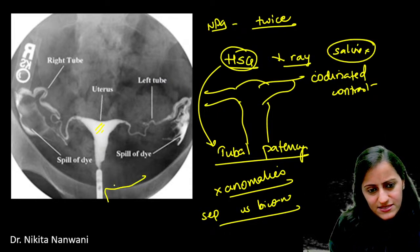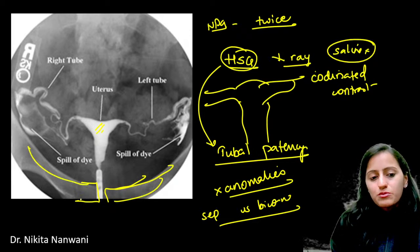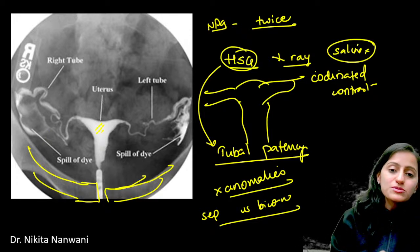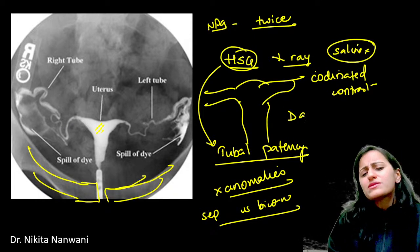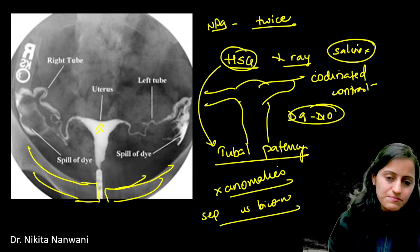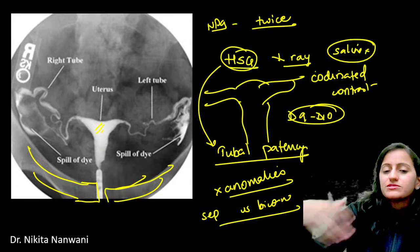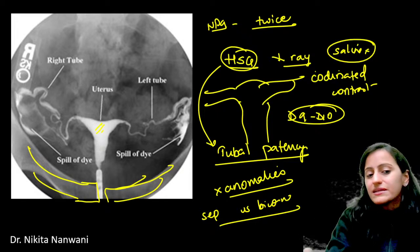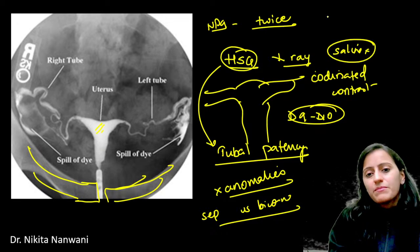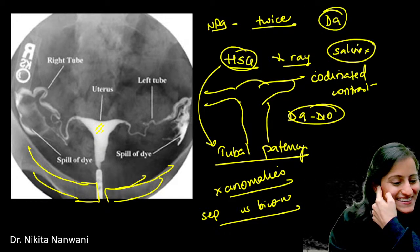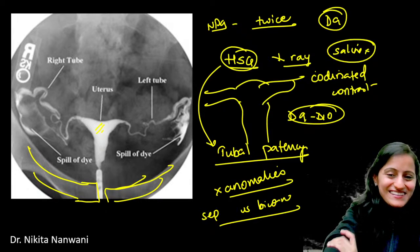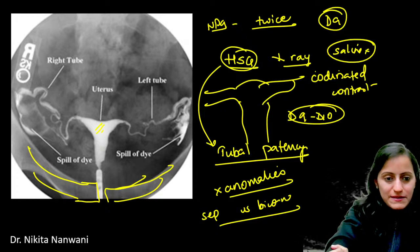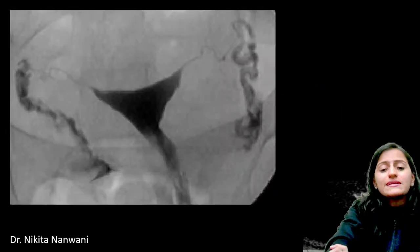The best time to perform HSD is around day 9-10 of the menstrual cycle. Around day 14, there's a chance the female may be pregnant — radiation risk. In the first 5 days, the endometrium is not yet repaired, which can lead to injury or endometriosis. So day 9 is the optimal time — done very frequently in exams.